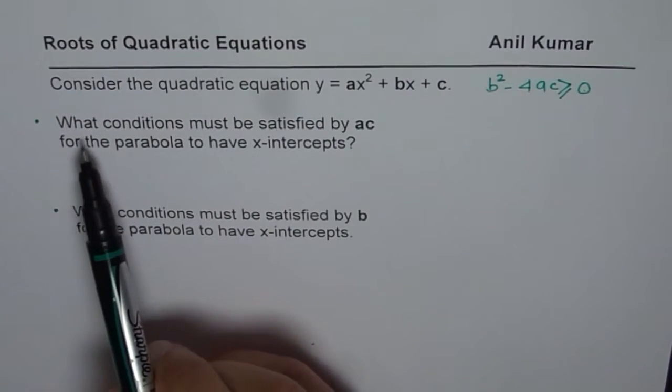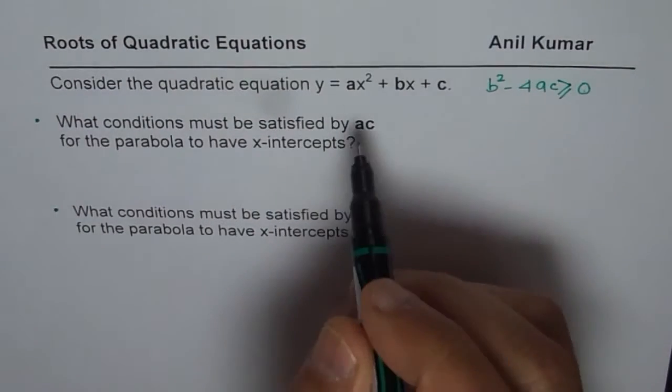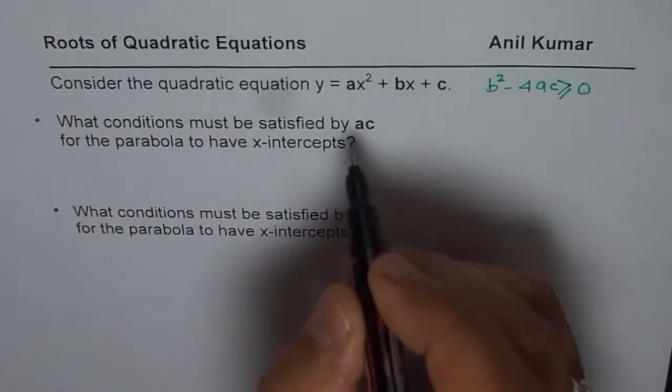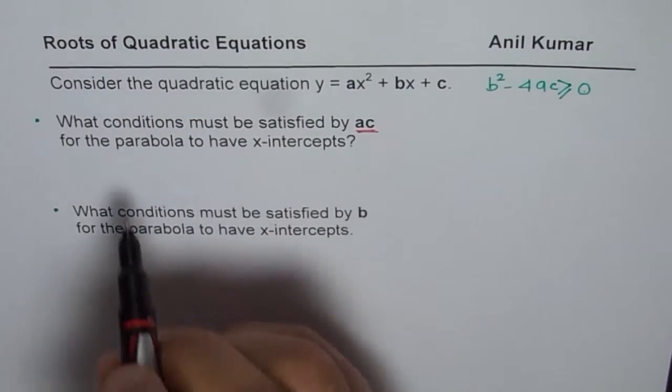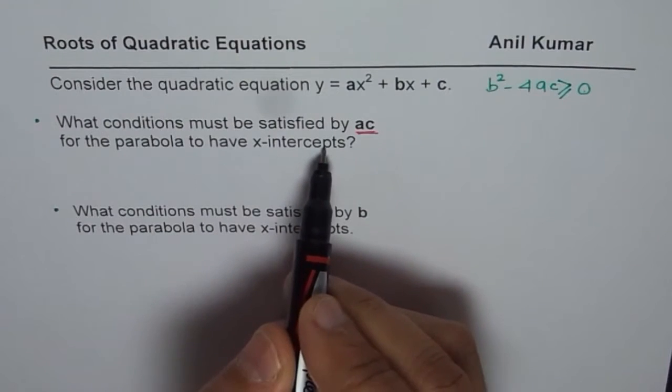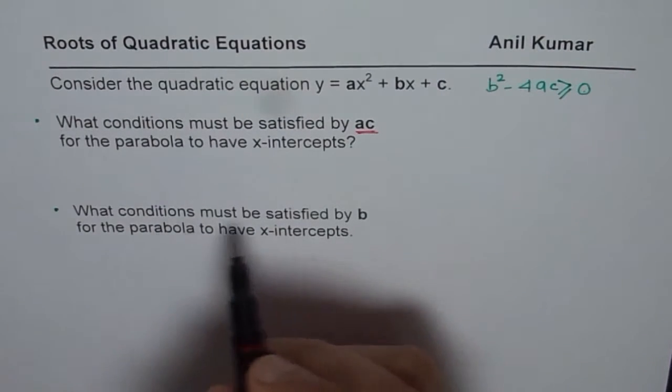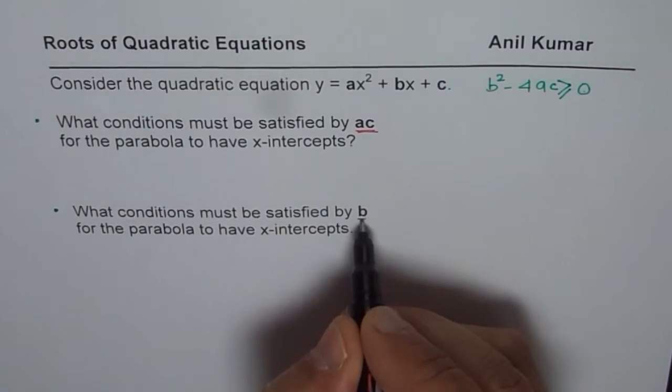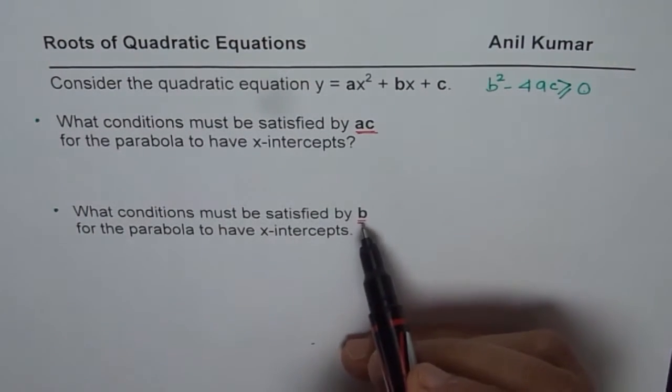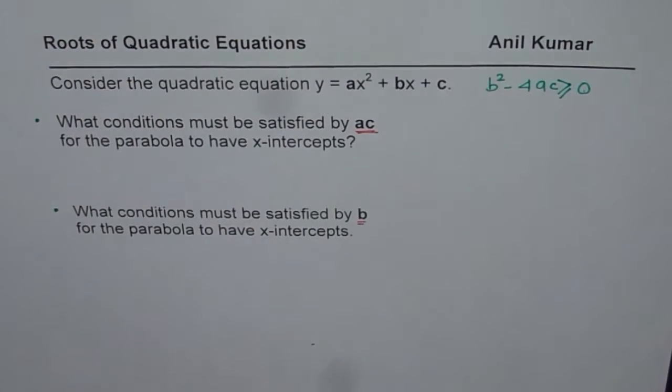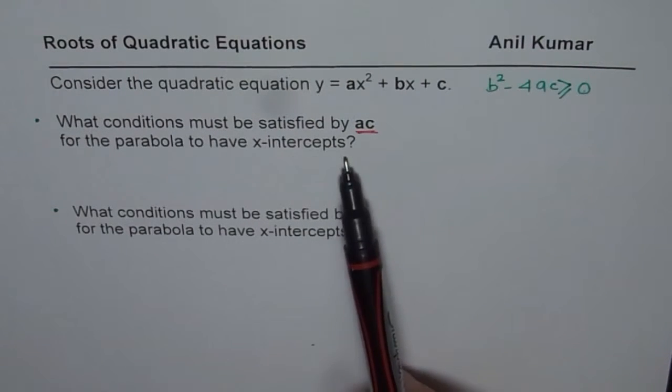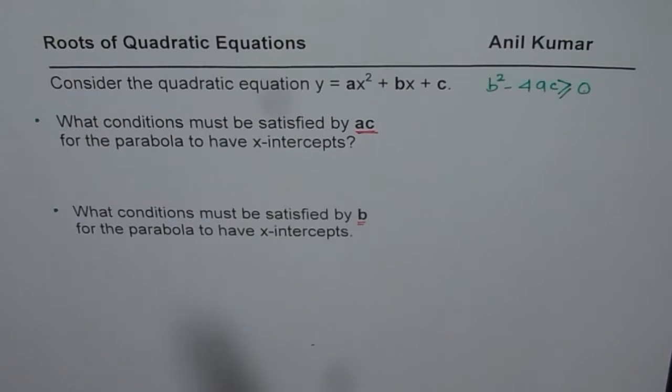Now the question here is what conditions must be satisfied by ac for the parabola to have x-intercepts? And the second part is what conditions must be satisfied by b? This question has variation of the concept. So I'd like you to now solve this inequality for ac, write your answer there. Solve this inequality for b and write your answer here. You can pause the video, solve and then look into my suggestions.